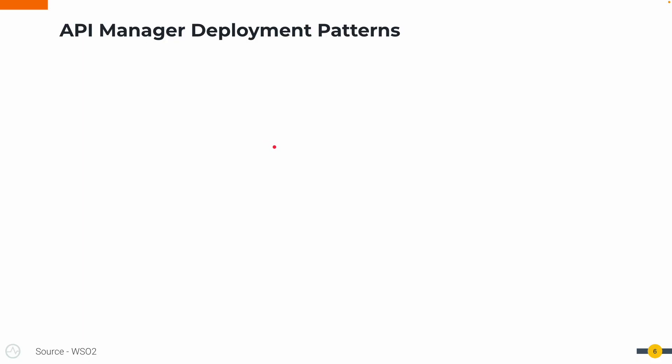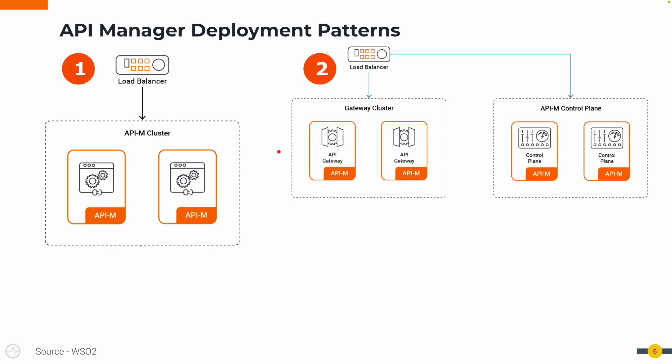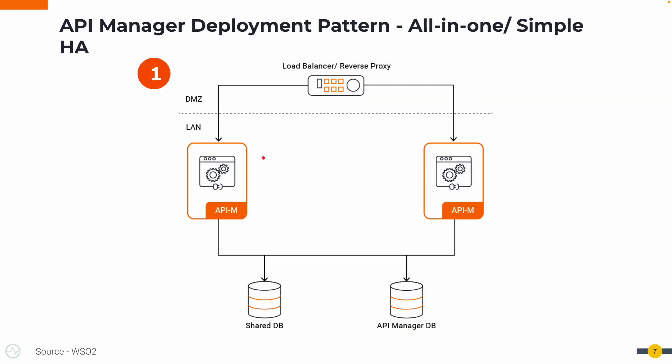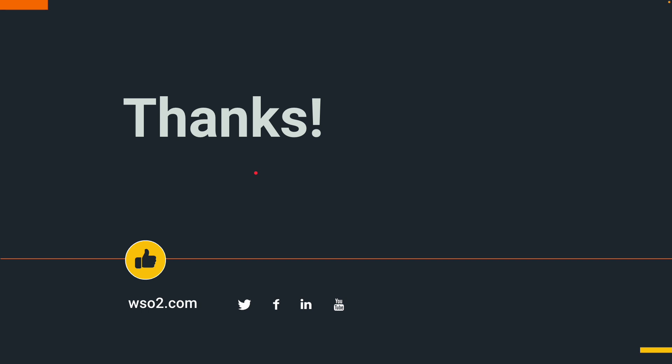So with that, I hope you are very clear on what are the different deployment patterns and what are the reference runtime components available as part of that single distribution in the API Manager. I will leave links to all the useful documentation pages in the comment section, and thanks a lot for joining my session. Please leave a comment if you have any feedback — thanks!